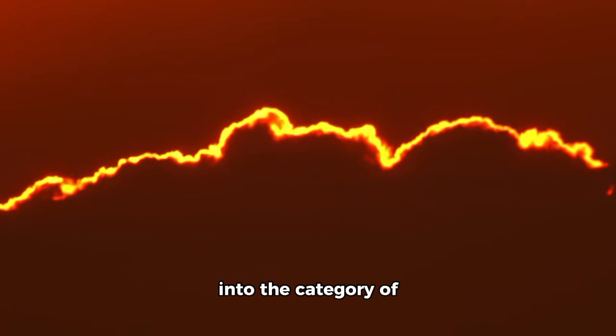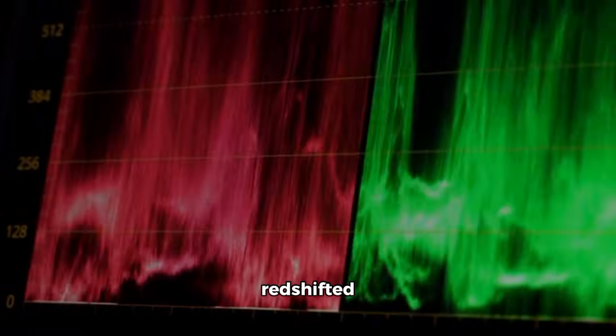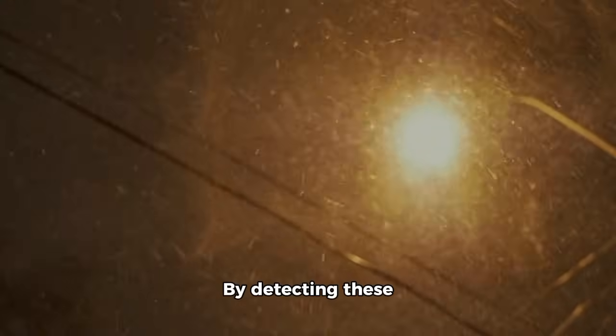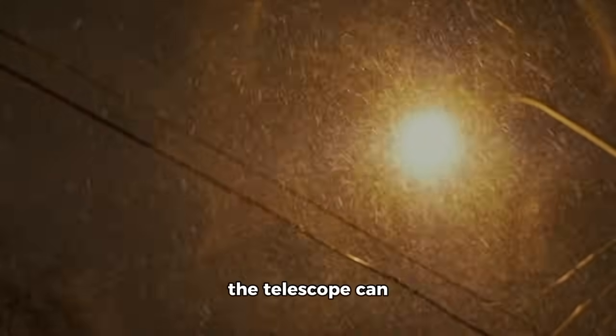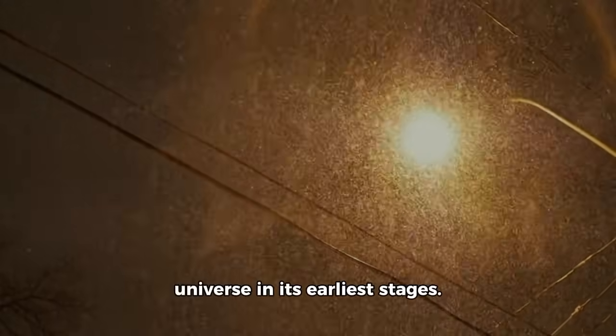These signals fall into the category of red-shifted ultraviolet radiation. By detecting these ancient beams of light, the telescope can essentially look back billions of years, offering snapshots of the universe in its earliest stages.